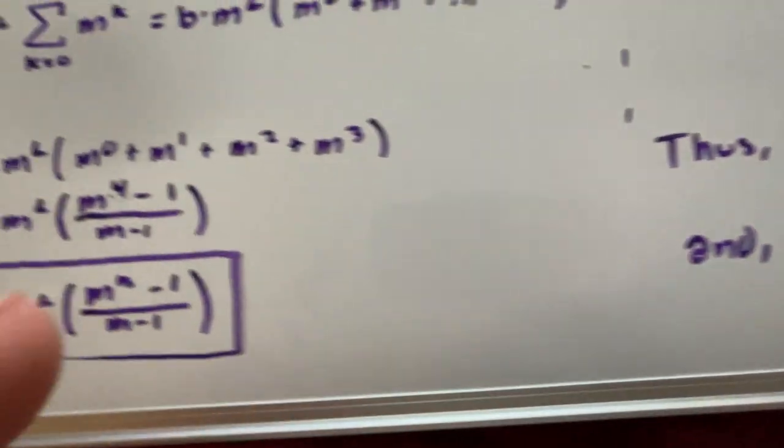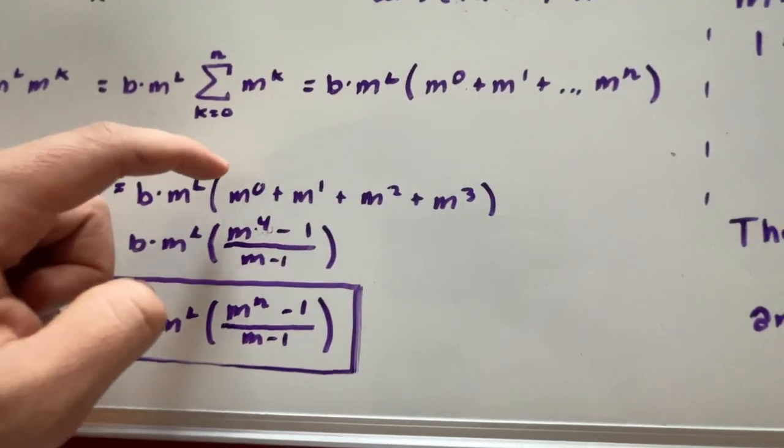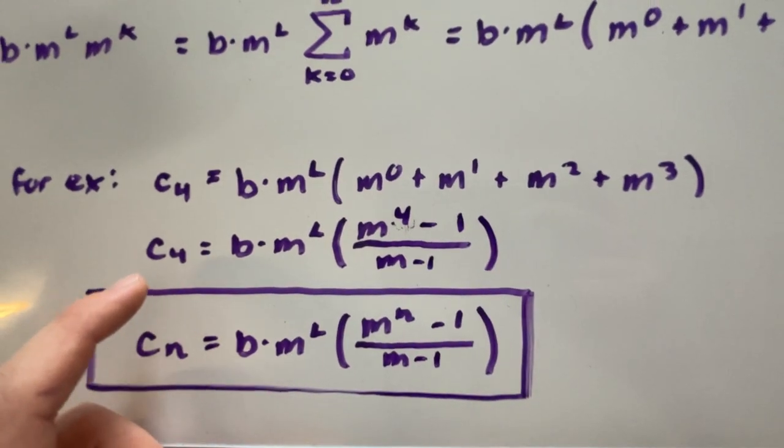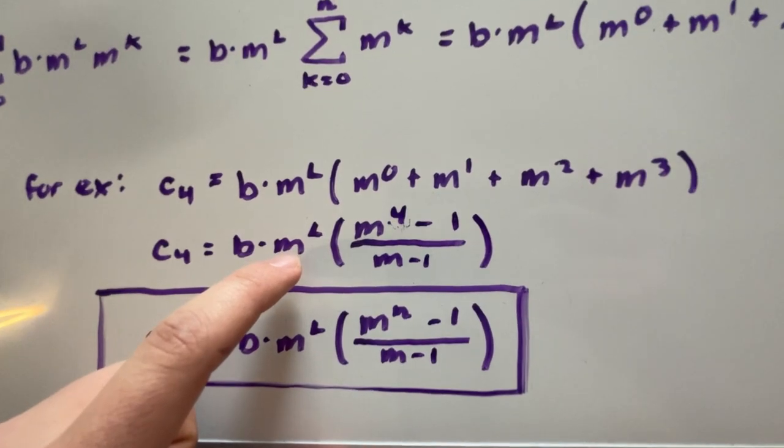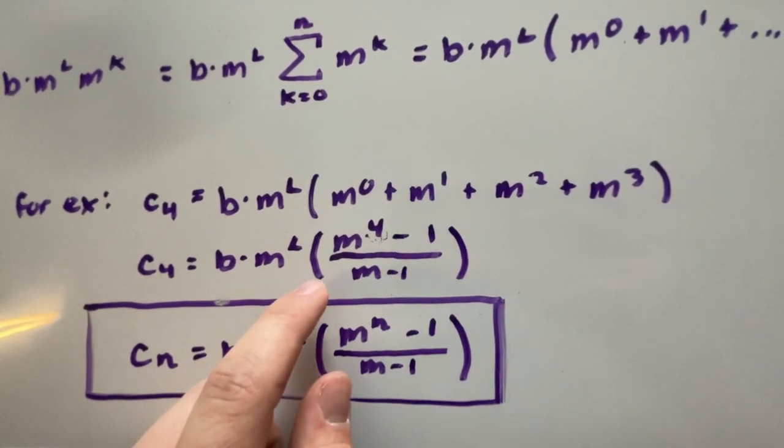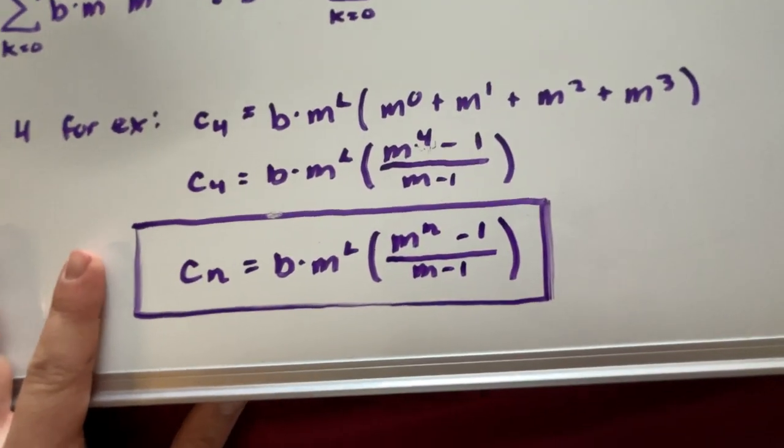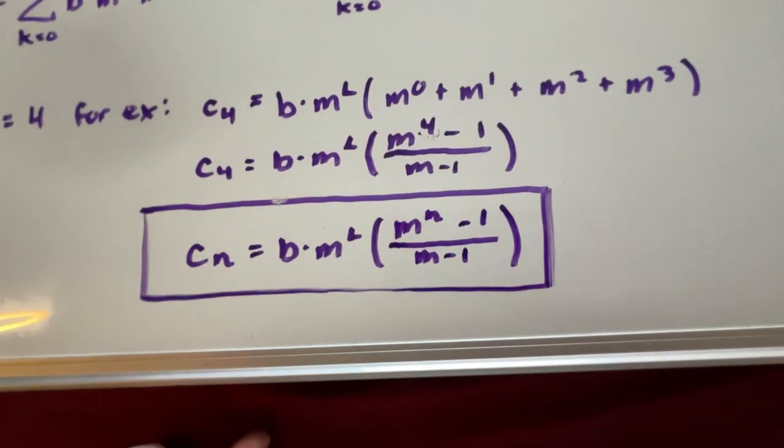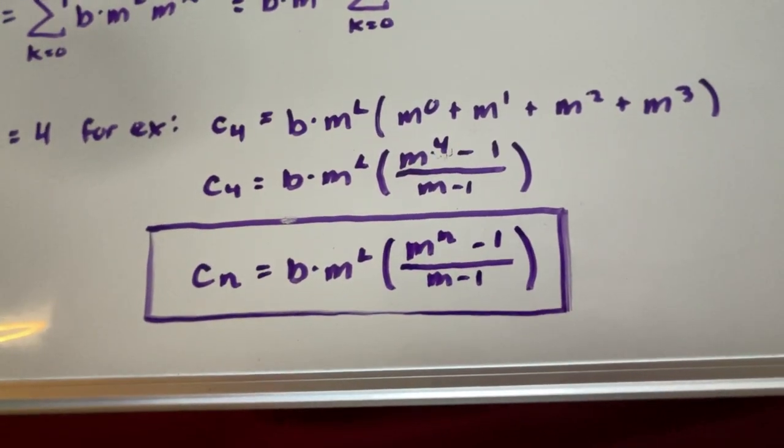Then what we can do is substitute this long sequence with just a simple equation. For our n equals 4 example, all we have here is just b times m to the power of l multiplied by m to the power of 4 minus 1 over m minus 1. Therefore we can say that our cost for however many upgrades we want to buy based on n is equal to this equation. So it's very nice. We don't need to take any sums. We just plug in a few numbers and we get our answer right away.